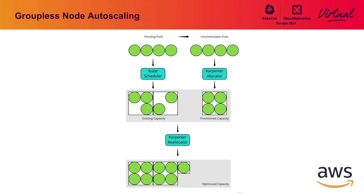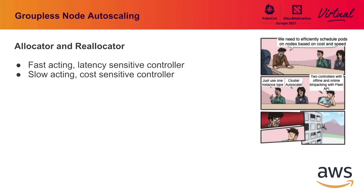Over time, you can get holes in the capacity and inefficient utilization. So we have another controller that looks globally at the cluster and attempts to optimize it over time. The result is two controllers: one is a fast-acting, latency-sensitive controller called the allocator, and the other is a slow-acting, cost-sensitive controller called the reallocator. Together, these work to both schedule pods as quickly as possible and optimize the resource utilization of your cluster.